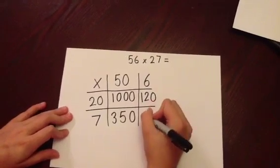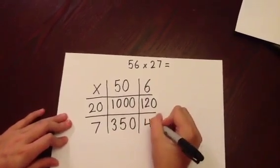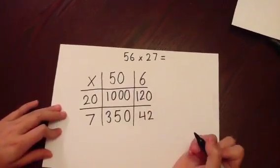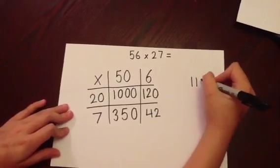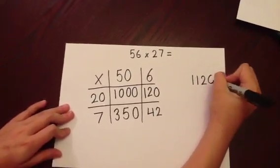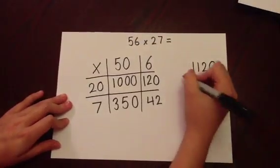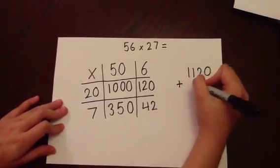And then 7 multiplied by 6, which is 42. We can mentally add those rows together to create column addition. So we have 1120, adding on 392.